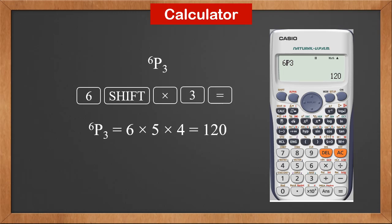We know 6P3 is 6 times 5 times 4. This is 120 also. So the result is good.